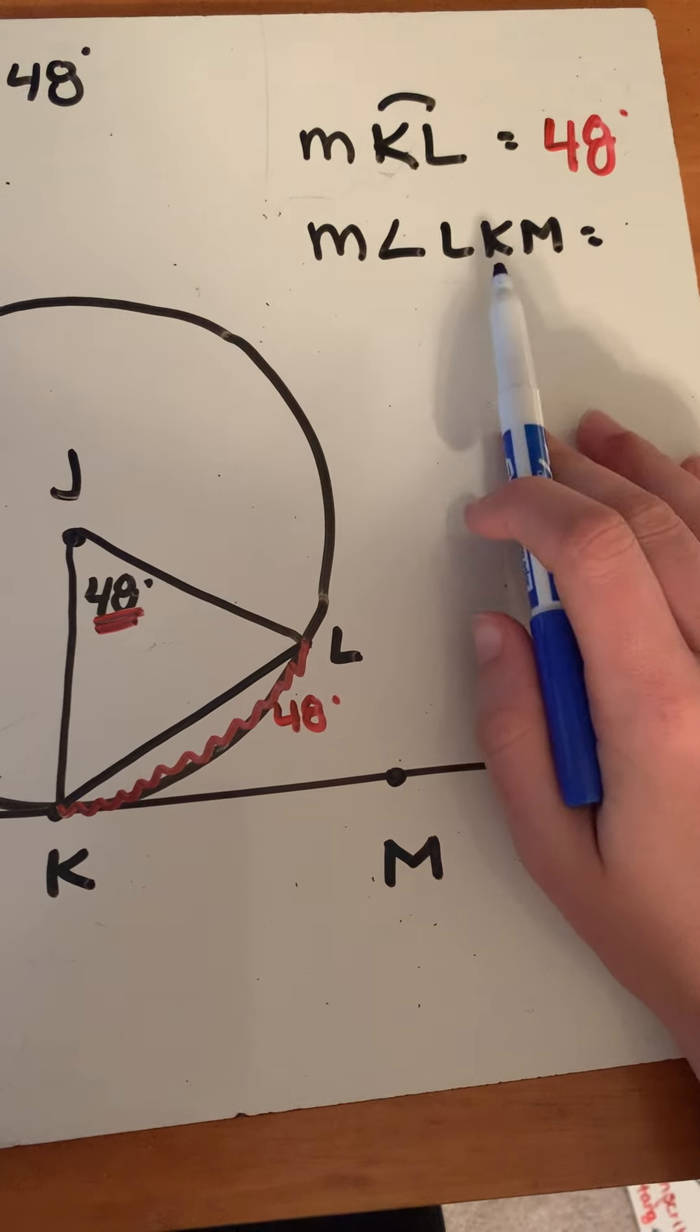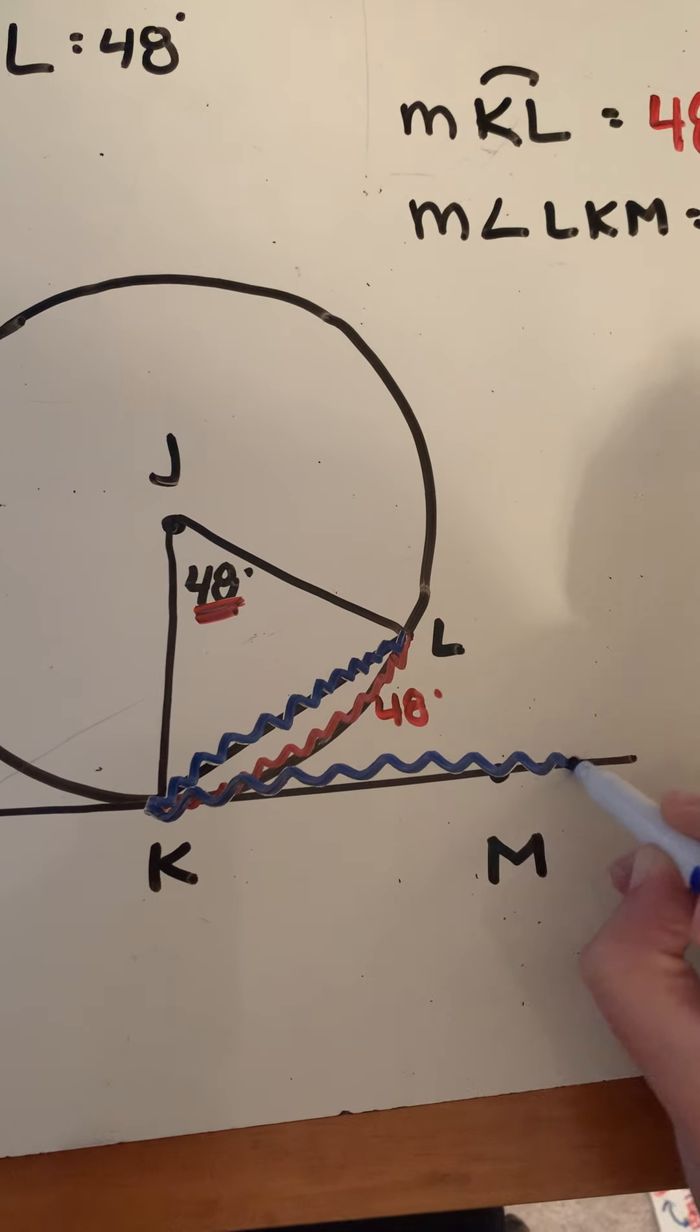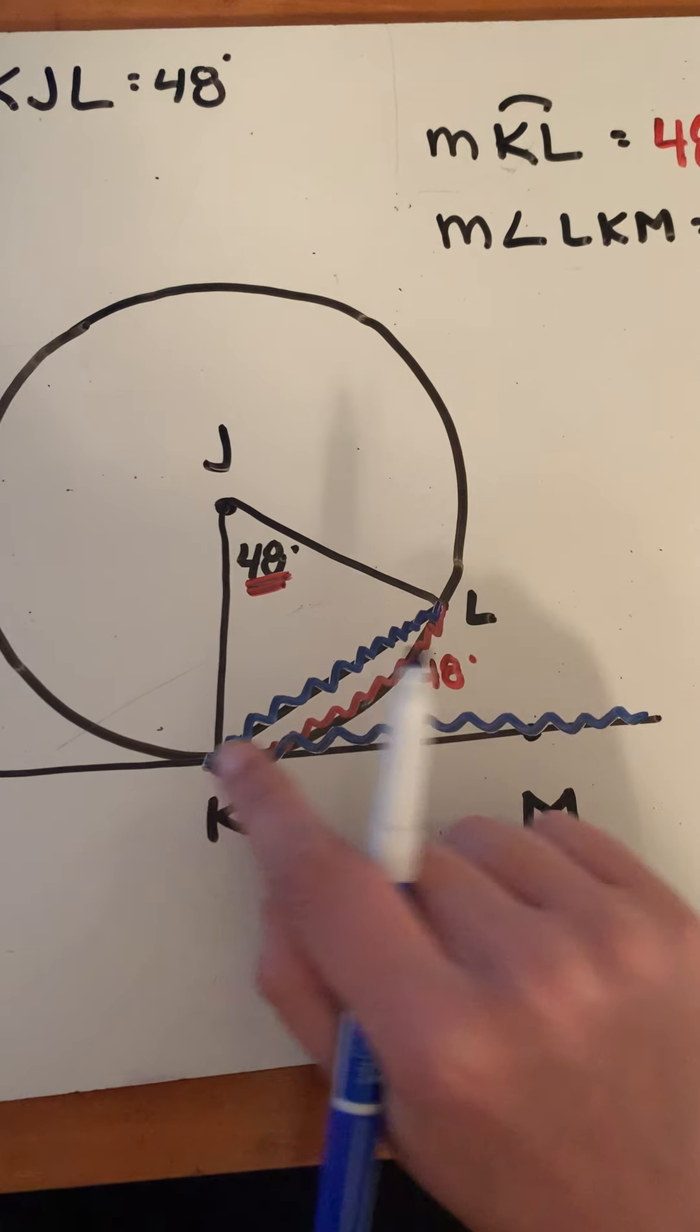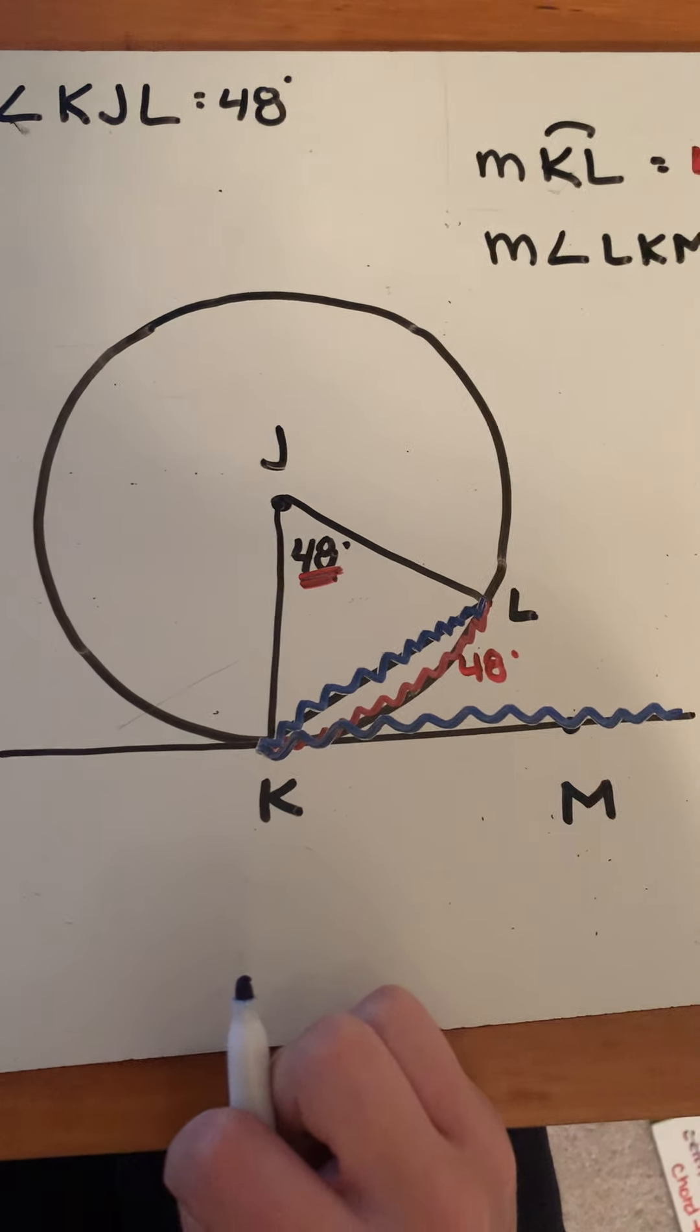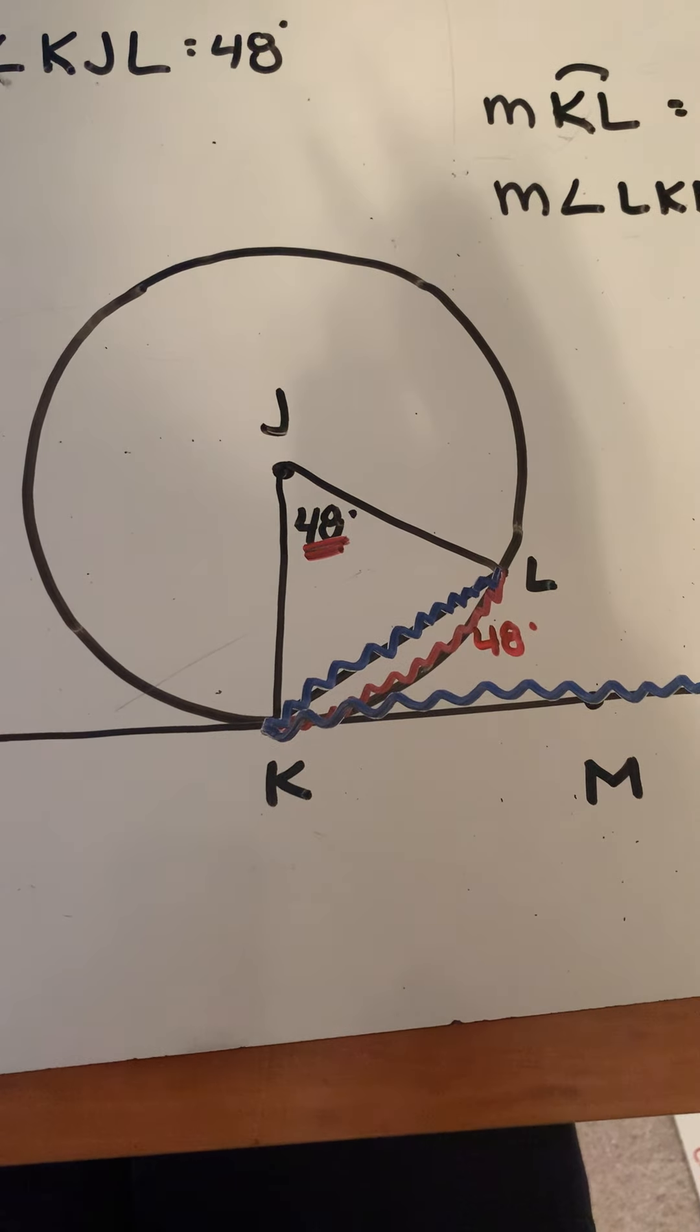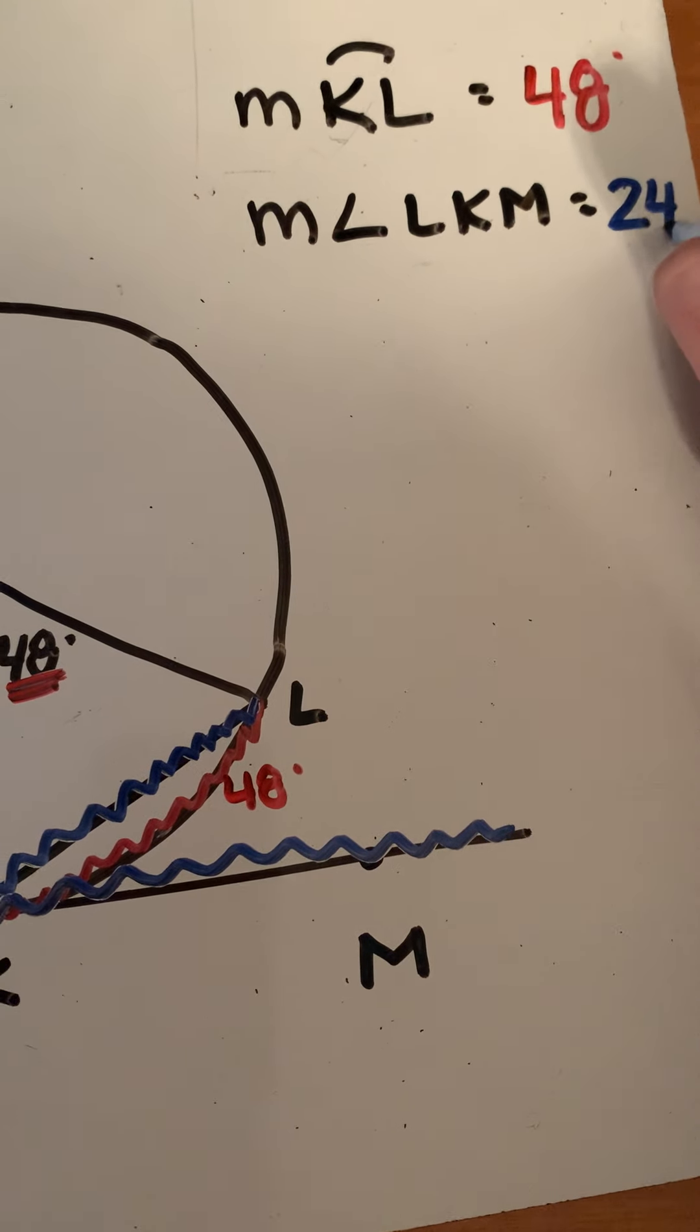Next, we're going to find angle LKM. We've got to figure out what type of angle this is. Is it a central angle? No, because none of L, K, or M are at the center of the circle. So we either have inscribed or chord-tangent. It doesn't really matter which one you classify it as, because they both do the same thing. How do they relate to the arc? They're half. So I'm going to take 48, divide it by 2, and get 24 degrees.